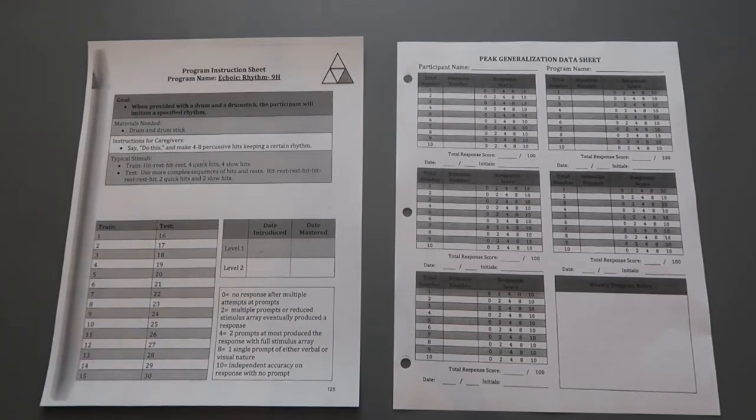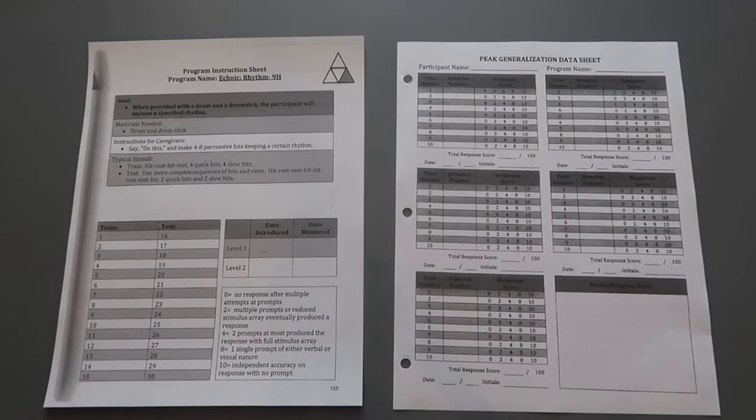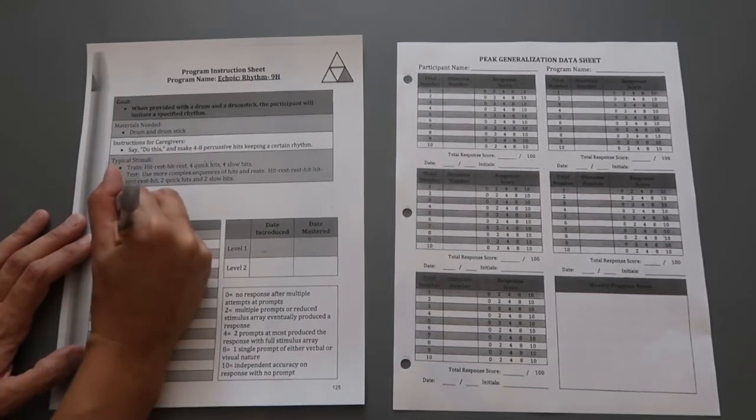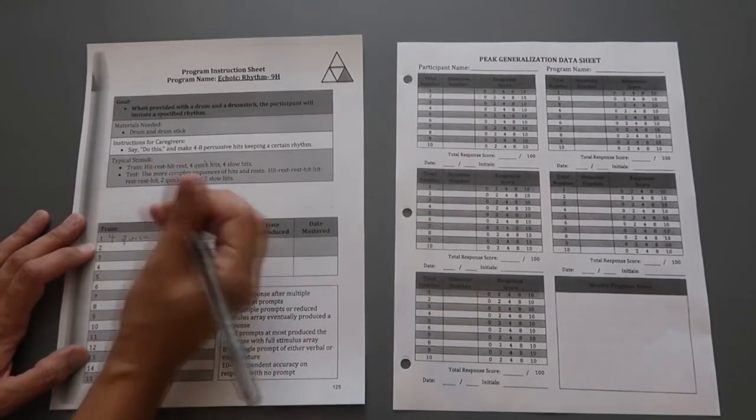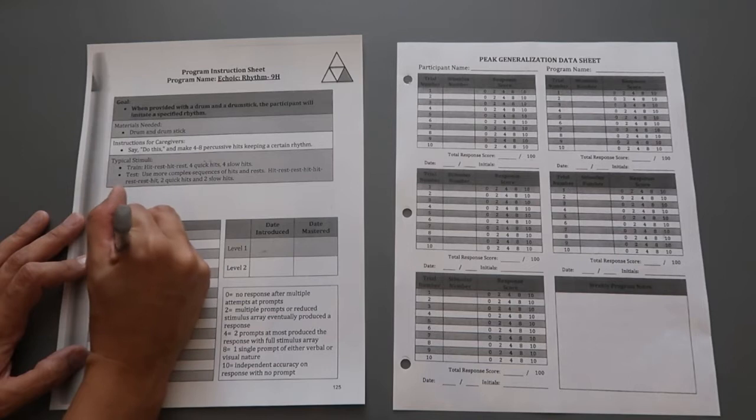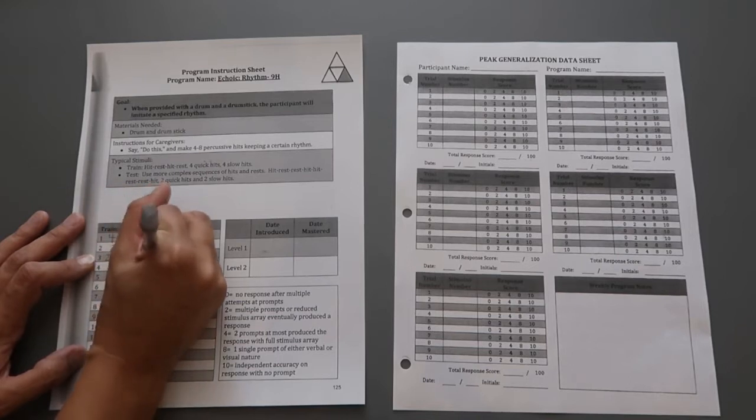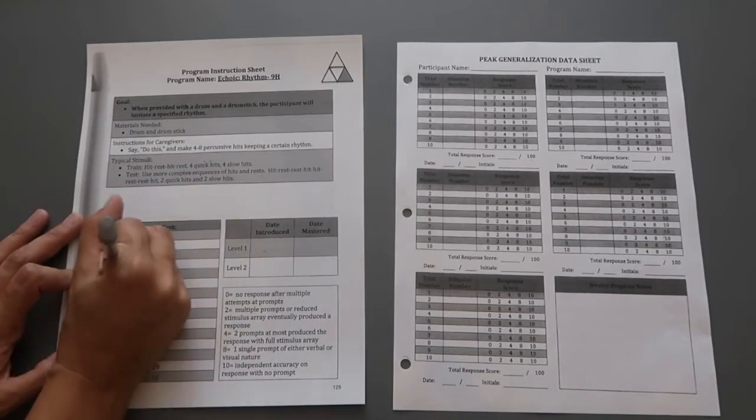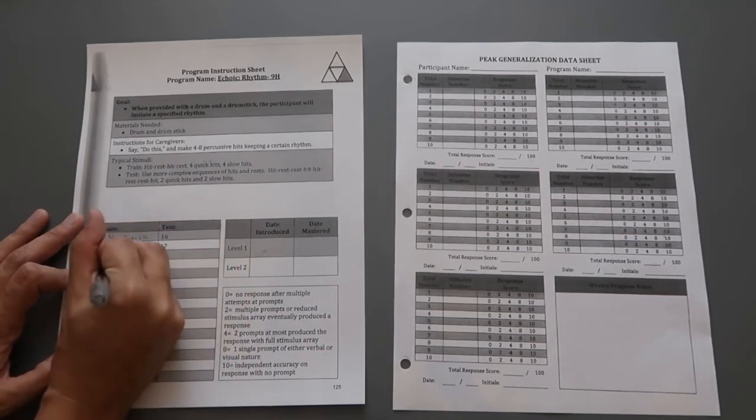So for this one, for echoic rhythm 9H, I'm going to pick out different stimuli that works for this specific participant. So this may not be one-size-fits-all, but this is just for this demonstration what I'm using to show. For train number one, I might put four quick. For two, maybe two slow. For number three, we might do two fast and two slow.